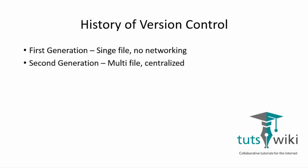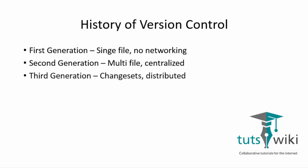Then comes the second generation with a multi-file system and centralized version control system. Now you can make changes on a working copy on your local machine for a particular version. Then comes the third generation with distributed version control system and change sets, which allow developers to work on the same project without sharing a common network.